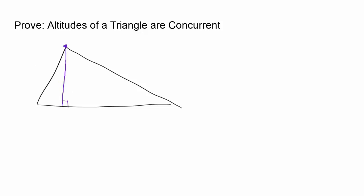So this thing is an altitude. Let me draw another altitude — starting at this vertex, it has to be perpendicular, or 90 degrees, to the opposite side. And let me draw another one, perpendicular to this side. You look at this and you say they look like they are intersecting at the same point. And if all three lines intersect at the same point, you say they are concurrent.